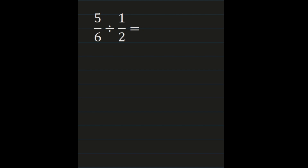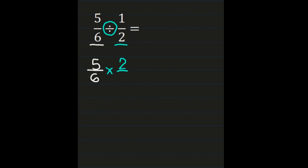For our second example, we have 5/6 divided by 1/2. Walking through our steps and showing all of our work, we're starting with 5/6. That first fraction, 5/6, stays exactly the same. Then we're looking at the division sign — we are turning it into multiplication, and then we're going to multiply by the reciprocal, which means we're going to look at the 1/2 and multiply by the reciprocal of 1/2, which is 2/1. We're basically flipping that 1/2 over.